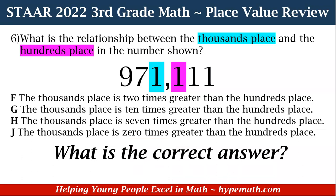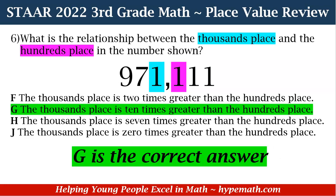Now, what is the correct answer? Is it F) the thousands place is two times greater than the hundreds place, G) the thousands place is 10 times greater than the hundreds place, H) the thousands place is seven times greater, or J) the thousands place is zero times greater? If you said G, you are correct — the thousands place is 10 times greater than the hundreds place.